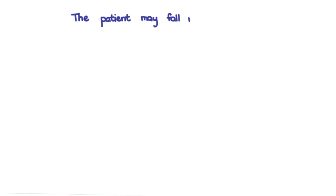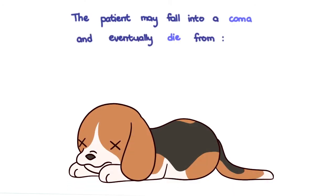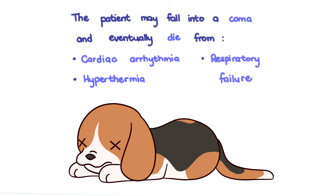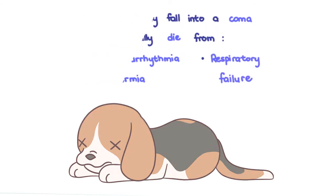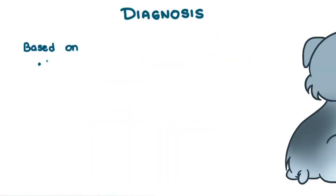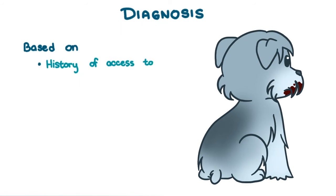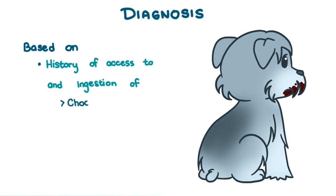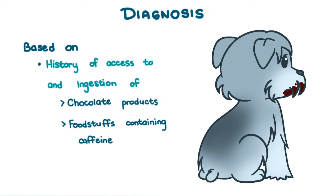The patient may fall into a coma and eventually die from cardiac arrhythmia, hyperthermia, and/or respiratory failure. Diagnosis is based on history of access to and ingestion of chocolate products and other foodstuffs containing caffeine and theobromine, as well as on matching clinical signs.